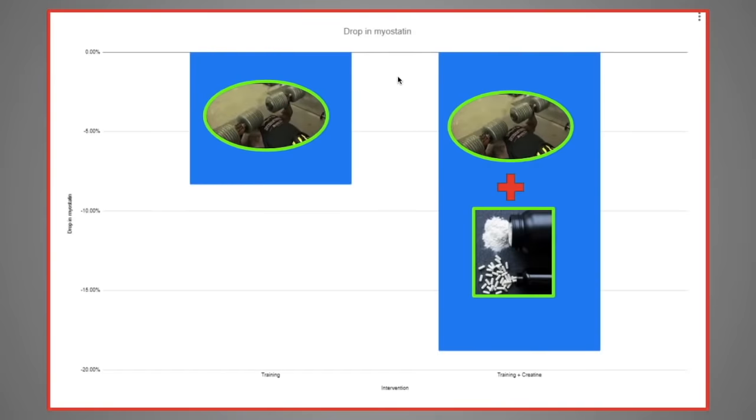Myostatin is also the reason why people who supplement with creatine tend to put on more muscle. It's not just the other effects of creatine. It's mainly that creatine also is a very, very powerful myostatin blocker. As you can see here, this is the drop in myostatin from the group that trained without creatine, and this is the drop in myostatin from the group that trained with creatine. Huge drop.